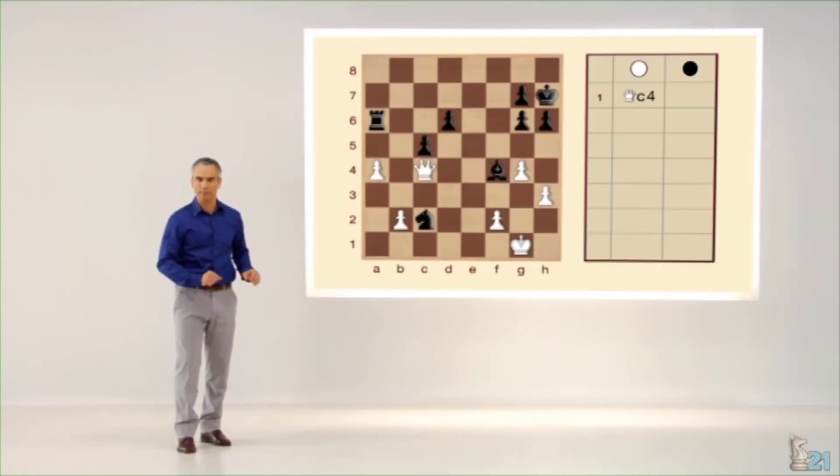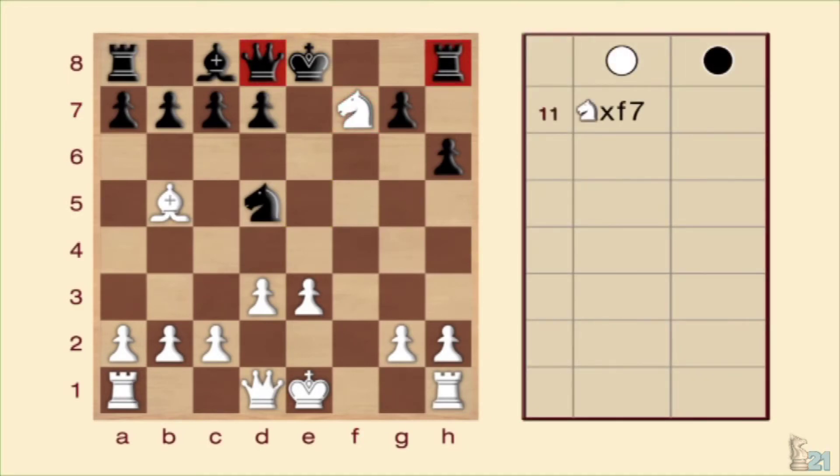Veamos ahora uno de contraataque. Para ello, pondremos una partida del ajedrecista ruso Mijail Chigorin, donde en las blancas, en la jugada 11, realizaron un ataque doble con caballo por F7. Las negras, en lugar de tomar rey por caballo, jugada que acabaría dejándoles en mala posición, se lanzaron al contraataque, amenazando a su vez una pieza más valiosa, lo que siempre es una buena manera de enfrentarse al ataque doble. ¿Cómo lo hicieron? Moviendo la dama a H4 y atacando al rey.